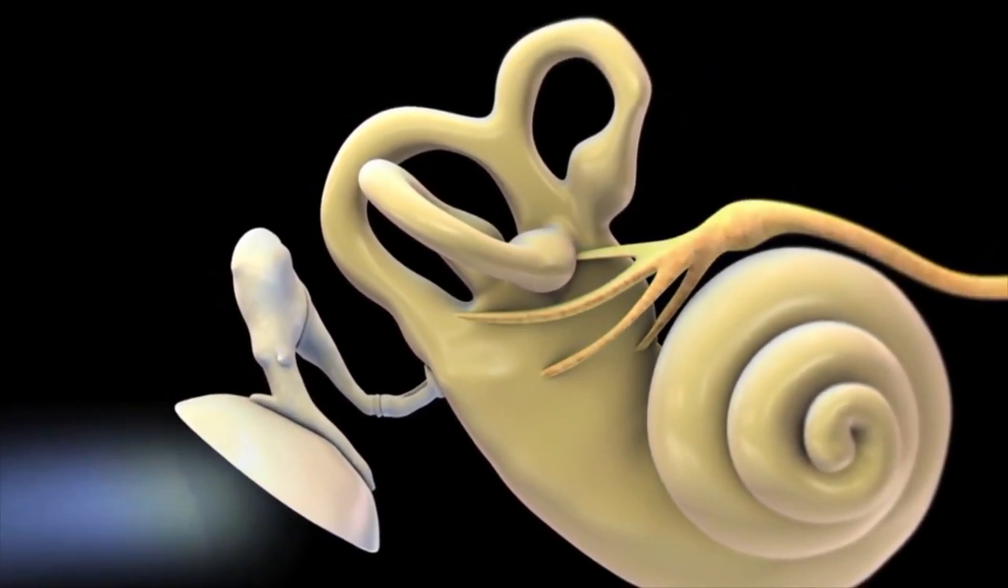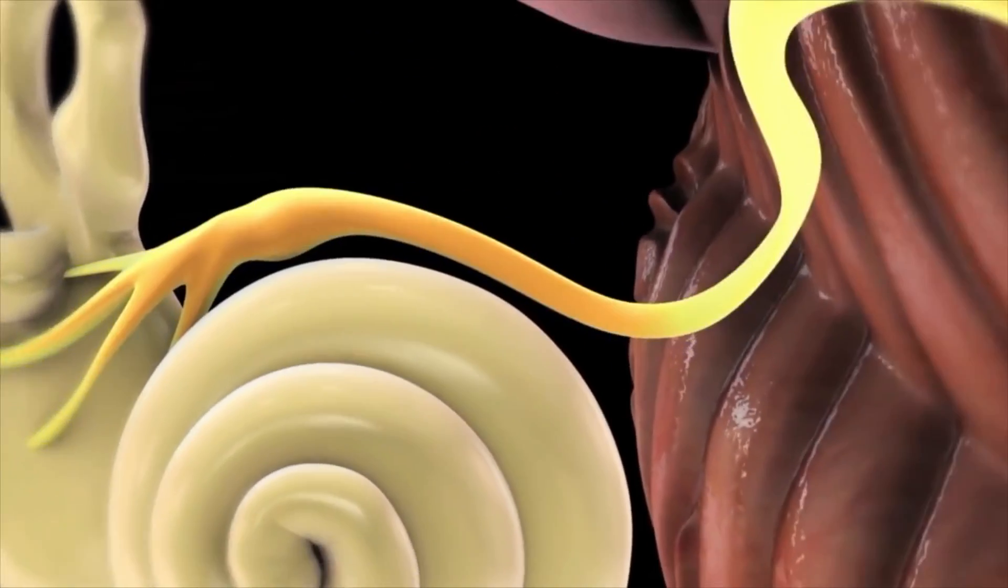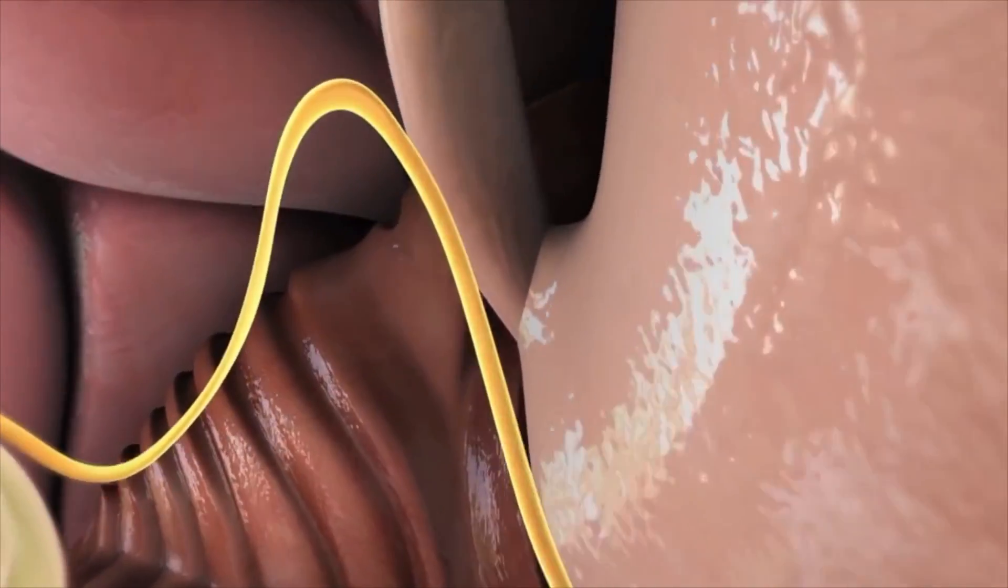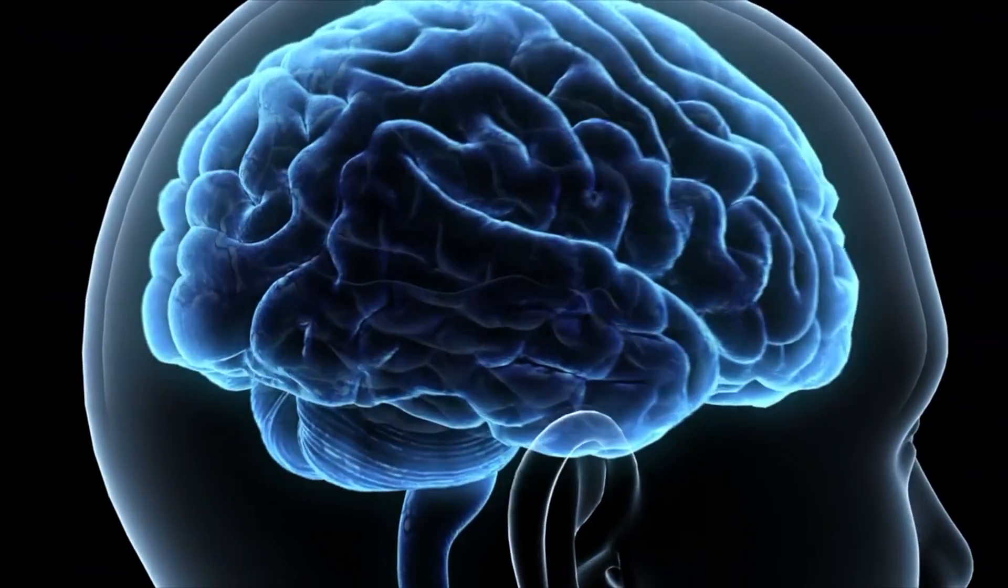The stapes then stimulates the cochlea through a small opening called the oval window. Within the cochlea, small hair cells stimulate the hearing nerve which carries the signal to a specific location within the brain called the auditory cortex.